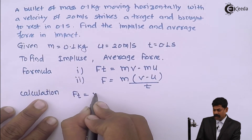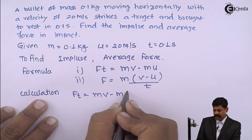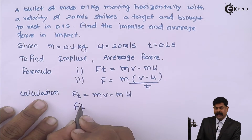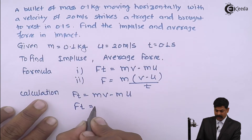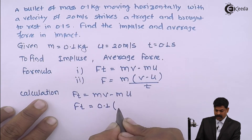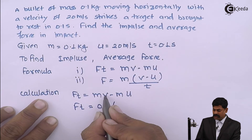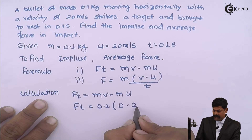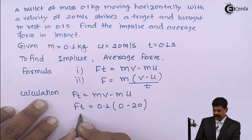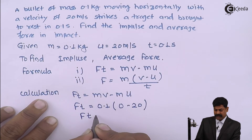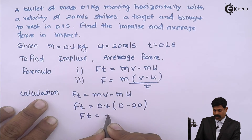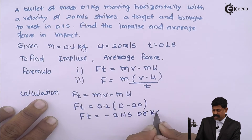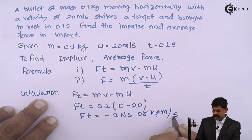From the first formula: Ft equals mv minus mu. Here, mass is 0.01 kg, final velocity is 0 minus 20 meter per second, so impulse Ft equals minus 0.2 newton second or kg meter per second.